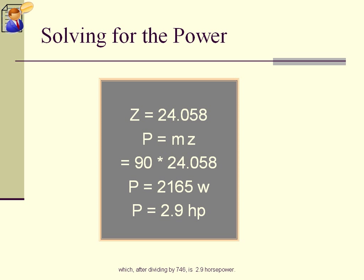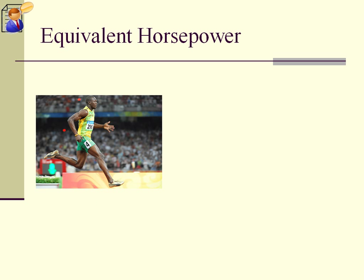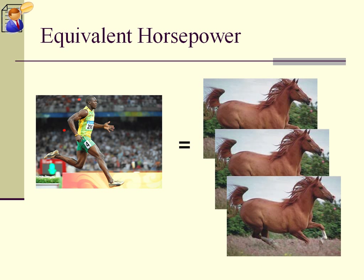Which, after dividing by 746, is 2.9 horsepower. Usain's power is equal to 1, 2, 3 horses. That's power.